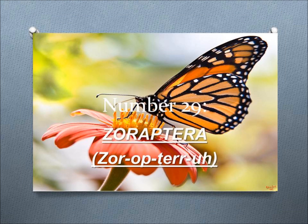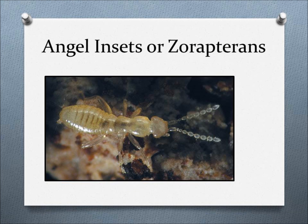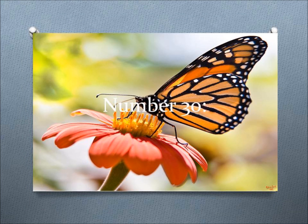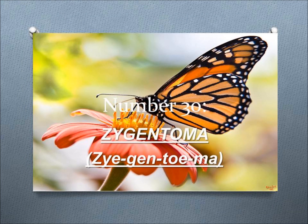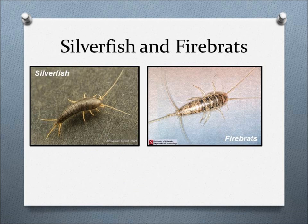Number 29, Zoraptera. This order includes angel insects, minute insects that live in small colonies in moist decaying logs that eat fungal hyphae and spores as food, but can also act as scavengers or predators of other tiny arthropods. Number 30, Zygentoma. This order includes silverfish and firebrats, insects that live in people's houses, but can also be found in caves and nests of other animals.